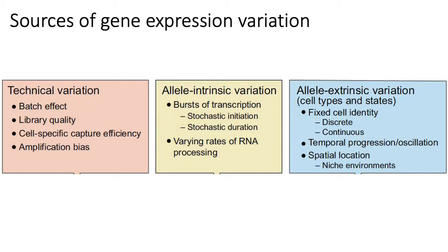What's listed under allele extrinsic variation basically refers to the fact that many people think there's no such thing as a fixed cell type. Cells are constantly moving through some kind of continuous cell state space, and you can never really find two cells in the exact same state. Furthermore, because cell identity and function are also functions of context and local position in the tissue, since no two cells are exactly in the same environment, any two cells of the same so-called type are always responding to different stimuli, and therefore they're also constantly varying.